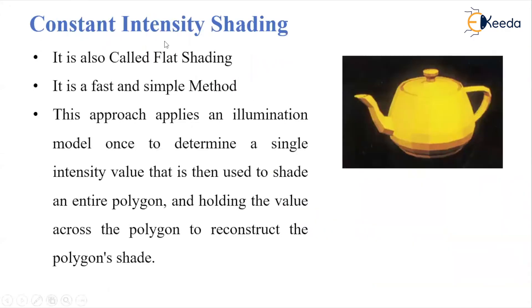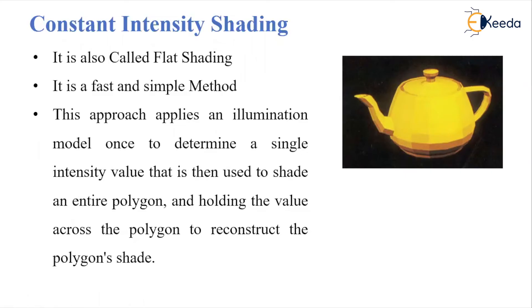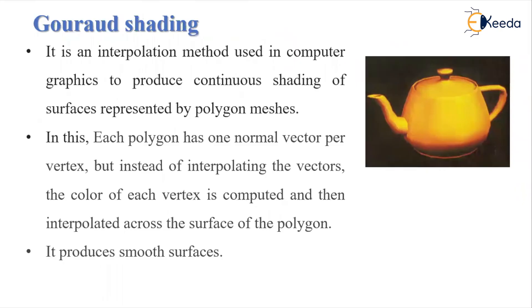First is constant intensity shading, also called flat shading. It is a simple and fast method. This approach applies an illumination model once to determine a single intensity value that is then used to shade the entire polygon. We color the polygon using flat shading, holding the value across the polygon to reconstruct the polygon's shade. This method is quite accurate but can be made more accurate by introducing the other methods.